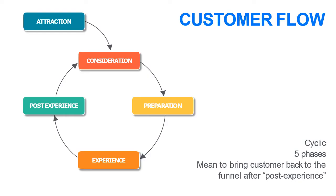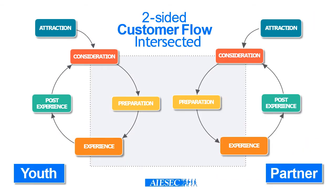The customer flow has five phases: attraction, consideration, preparation, experience, and post-experience. In IGP we have two customers — the youth, which are the exchange participants, and the partners in terms of enabler NGOs and all the partners that we work with to create opportunities for our customers.